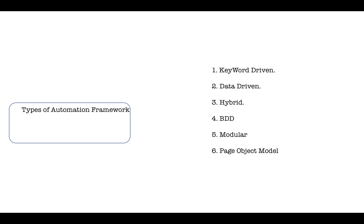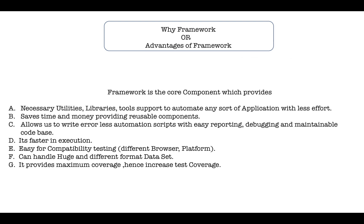The types of automation frameworks available today are: keyword-driven, data-driven, hybrid, BDD (behavior-driven development), modular, and page object model.